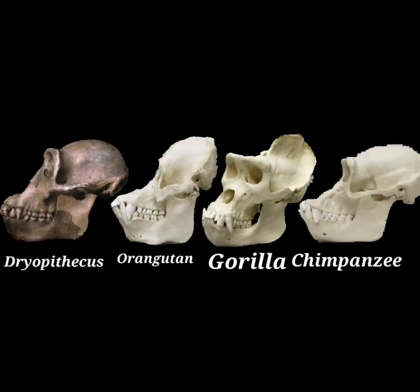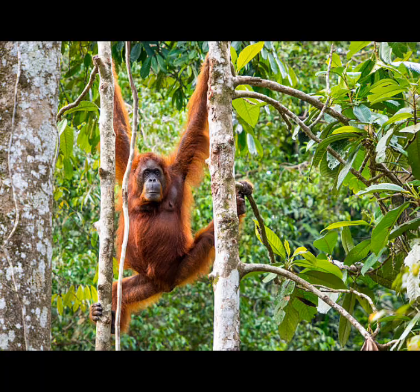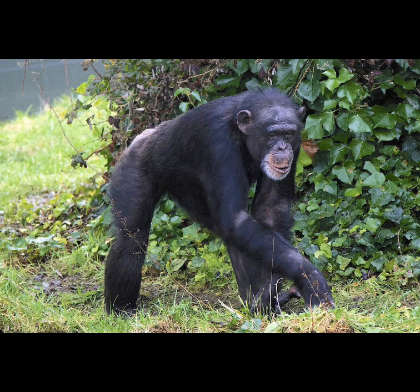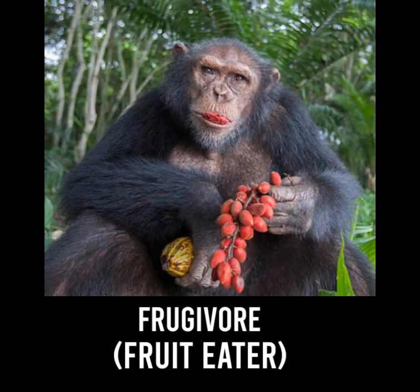Its locomotion style was akin to that of an orangutan or chimpanzee, engaging in suspensory movements in trees, and it walked on its knuckles when on the ground. It was primarily a frugivore.